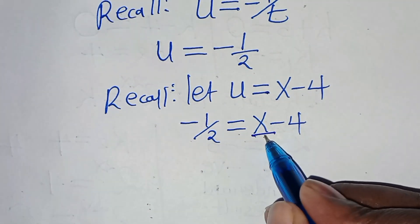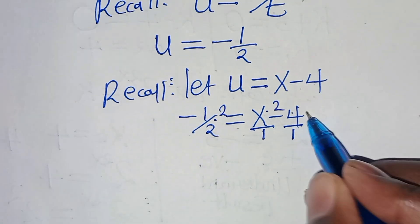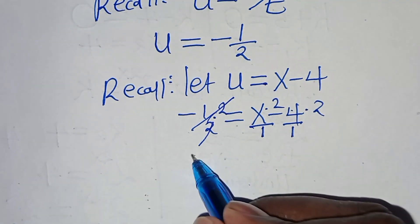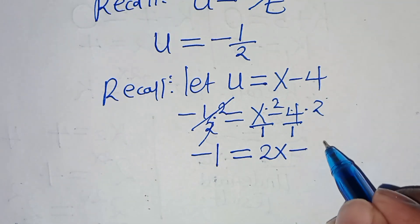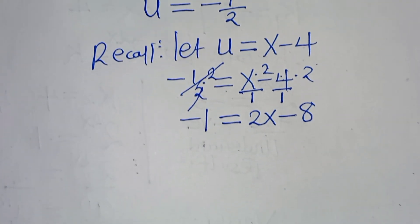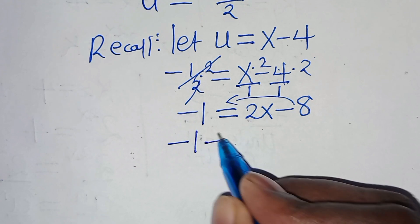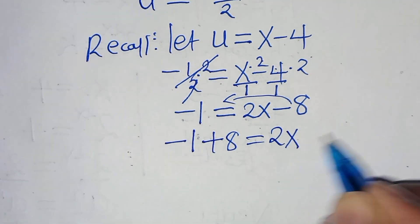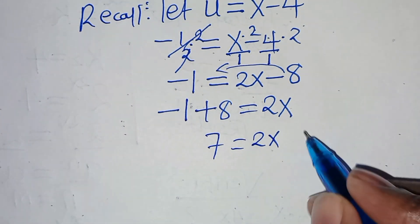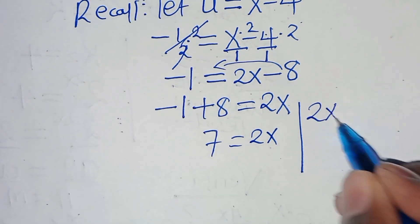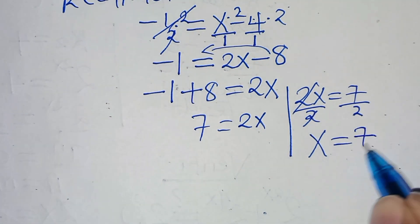Since x is a number over 1 and 4 is over 1, let's multiply both sides by 2, so that we have minus 1 equals 2x minus 8. Taking minus 8 to the left hand side, we have minus 1 plus 8 equals 2x. So minus 1 plus 8 is 7, giving us 2x equals 7, and therefore x is equal to 7 over 2.